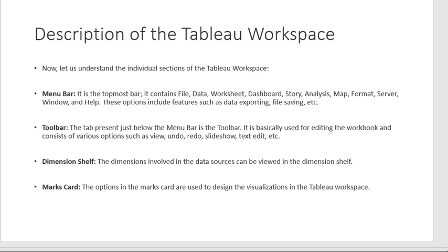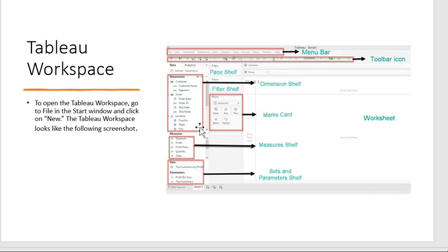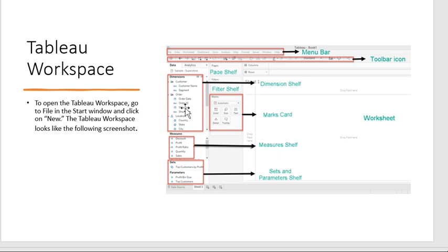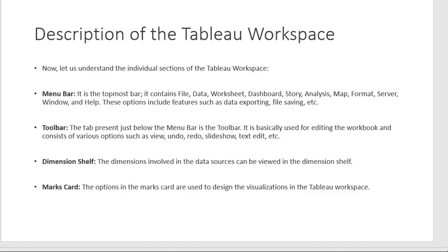The Marks card is used to design the visualization in the Tableau workspace. It provides options for Color, Size, and Text. For deeper analysis, we can use different colors, sizes, and text for different attributes — for example, different colors for different countries, states, or cities, enabling very deep analysis of data.